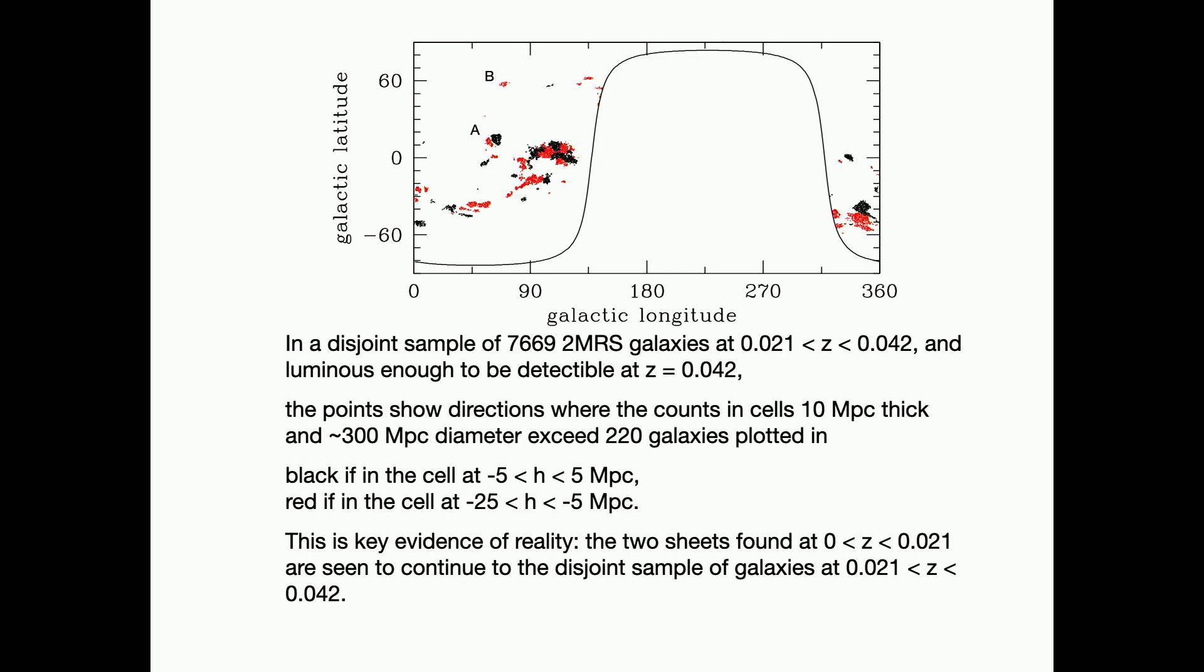So I go to a greater distance. Here it is. This is a disjoint sample. Disjoint. It doesn't know about what was going on in the previous measurement. Here, this is a much bigger volume, and in order to have interesting numbers of counts, I have to increase the cell size. This is a sample, 8,000 of the two MARS galaxies. This is the distance range. These are bright enough to be detectable at the outer distance.